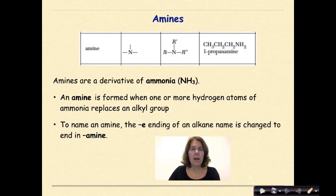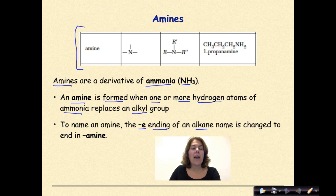Let's begin by talking about amines. And here is the image that is taken from reference table R of your region's reference tables. Amines are a derivative of the molecule ammonia, which we know is NH3. An amine is formed when one or more hydrogen atoms of ammonia is replaced by an alkyl group. Remember, an alkyl group is any type of branch. To name an amine, the E ending of an alkane name is changed to end in amine.